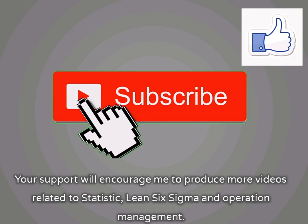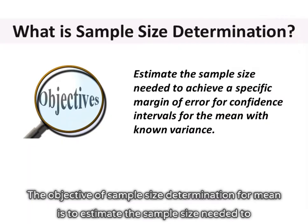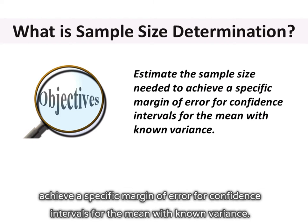The objective of sample size determination for mean is to estimate the sample size needed to achieve a specific margin of error for confidence intervals for the mean with known variance.